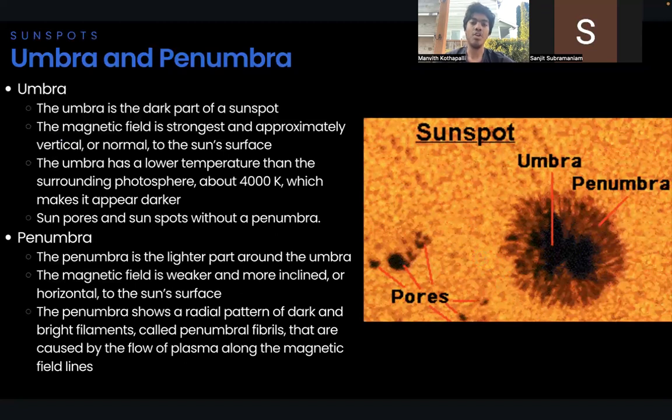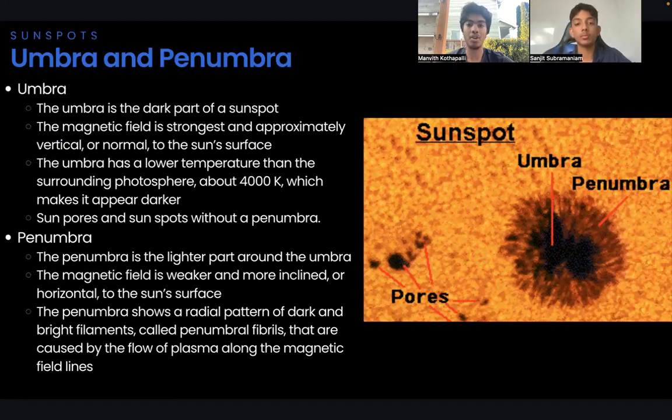The umbra has a lower temperature than the surrounding photosphere, about 4,000 Kelvin, which makes it appear darker. The umbra can have various shapes such as circular, elliptical, or irregular.